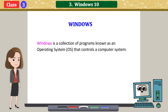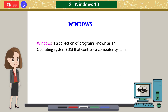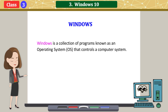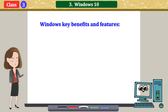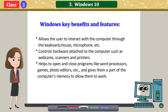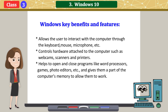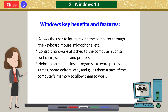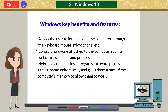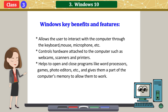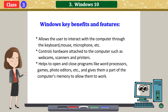Windows is a collection of programs known as an operating system that controls a computer system. Windows key benefits and features: it allows the user to interact with the computer through the keyboard, mouse, microphone, etc. It controls hardware attached to the computer such as webcams, scanners, and printers. It helps to open and close programs like word processors, games, photo editors, etc.